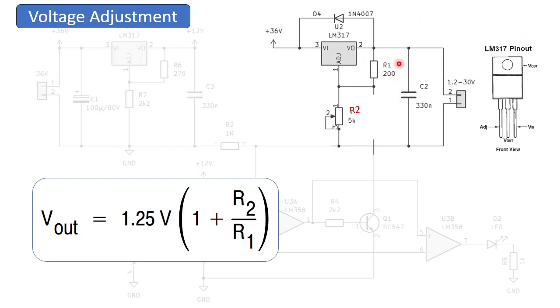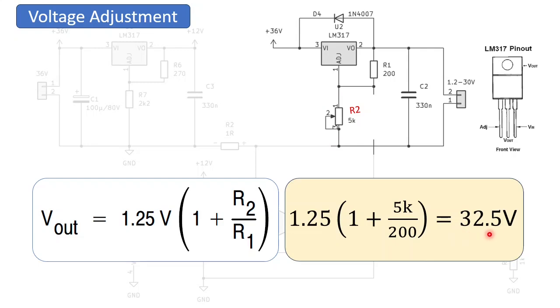So, if we use 200 ohms here and 5k here, we can reach 32.5 volts. Nice formula.